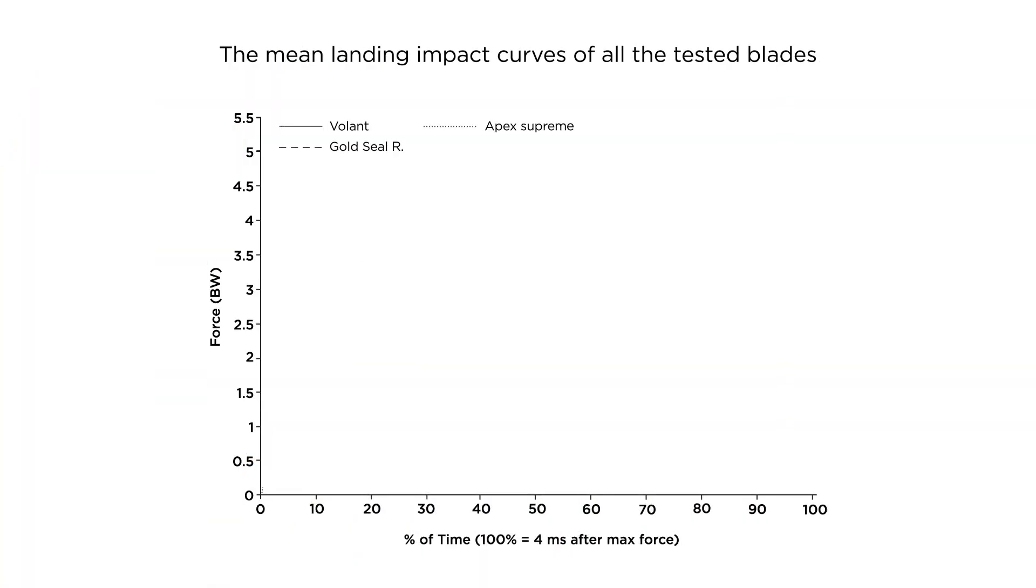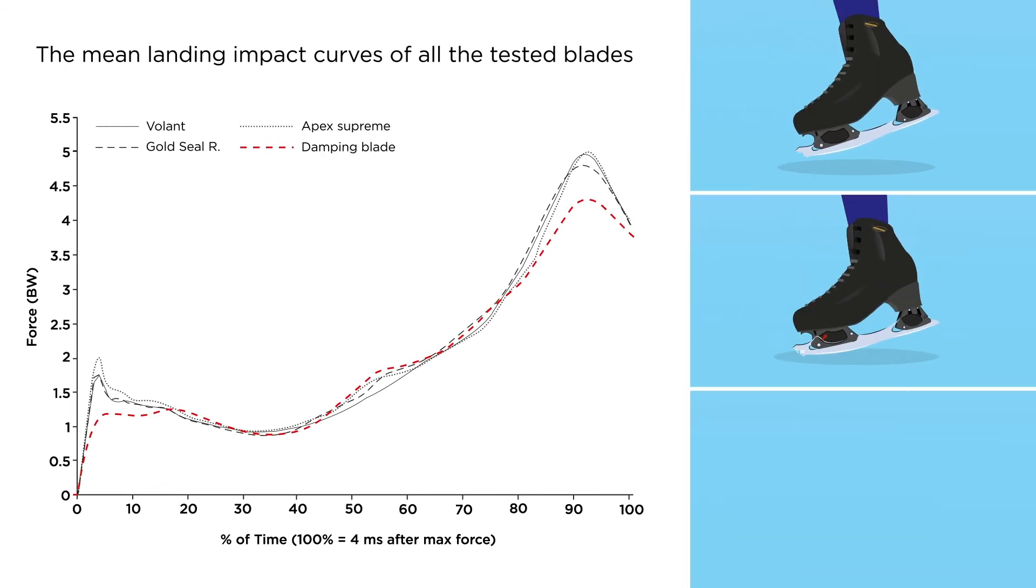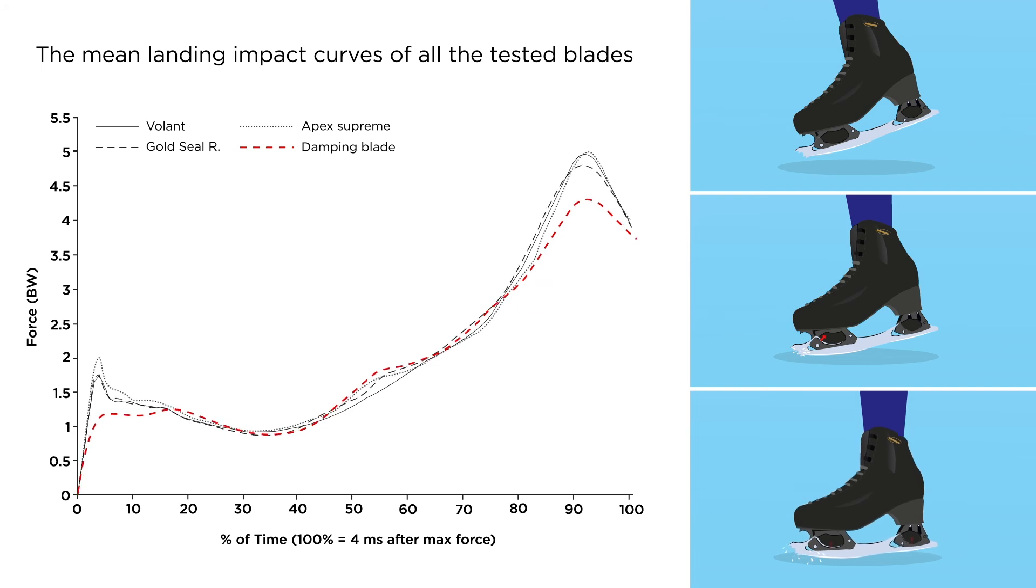Implementing the innovative damping system into blades can reduce the risk of landing impact-related overuse injuries in modern figure skating.